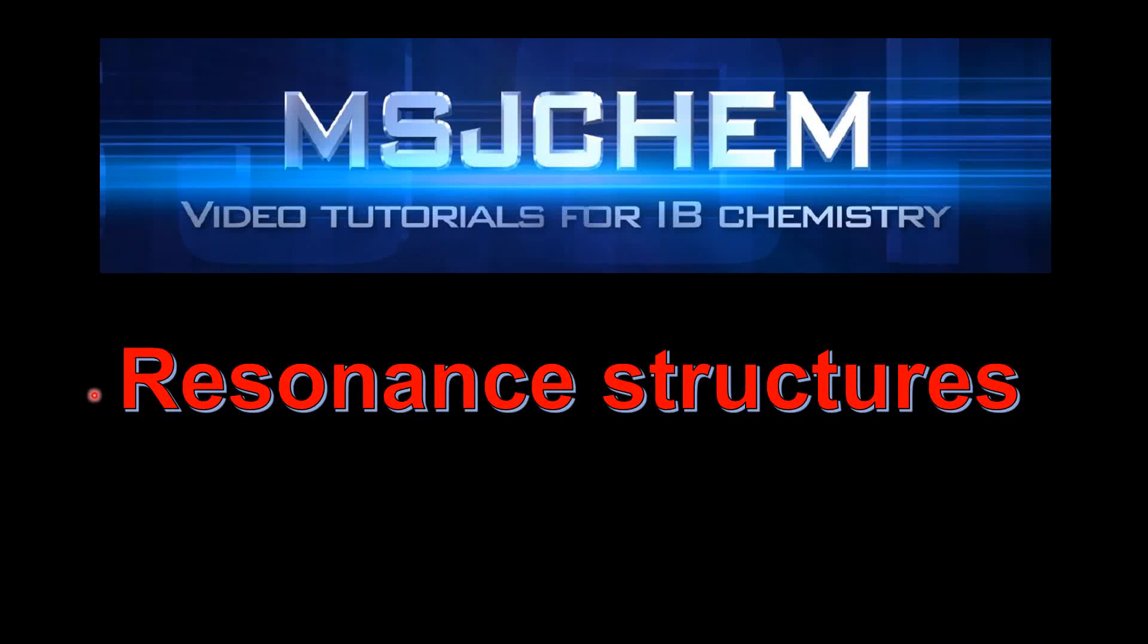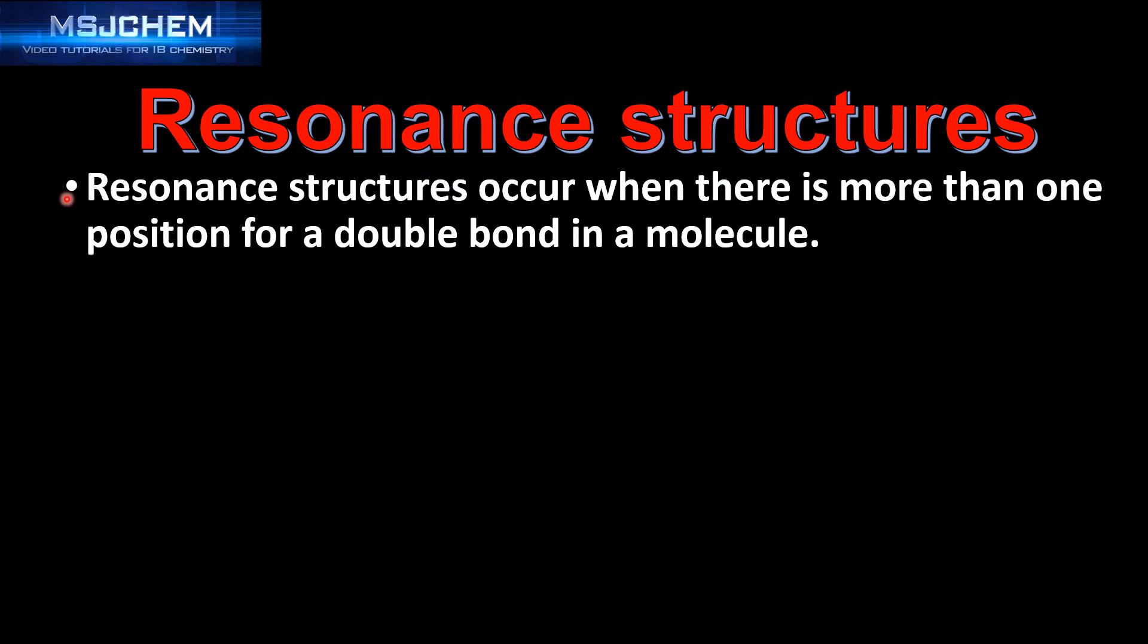This is MSJChem and in this video I'm going to look at resonance structures. Resonance structures occur when there is more than one position for a double bond in a molecule.